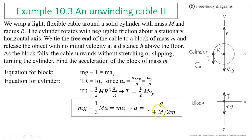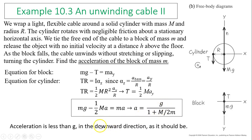This acceleration is less than g because it's not free-falling — the rope is pulling it upward somewhat. We also know from this that the tension is not equal to Mg; tension is actually less than Mg.